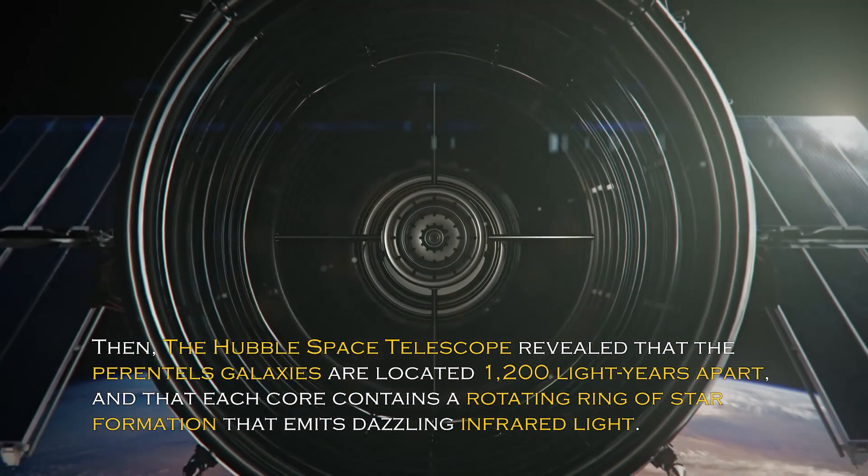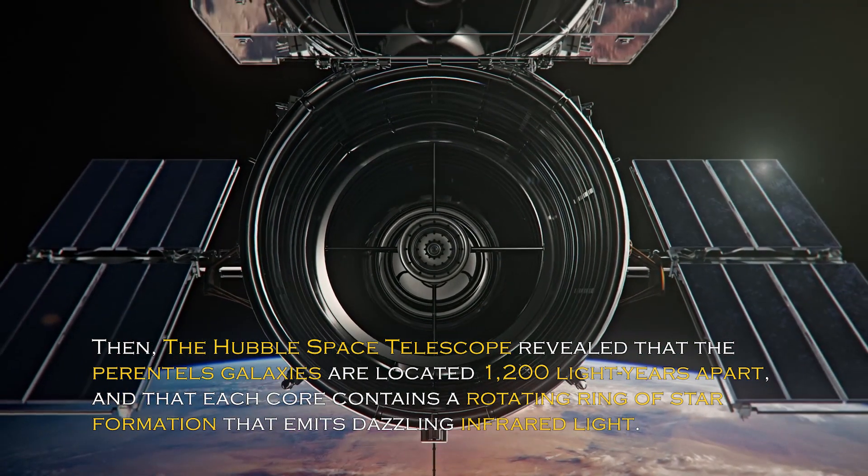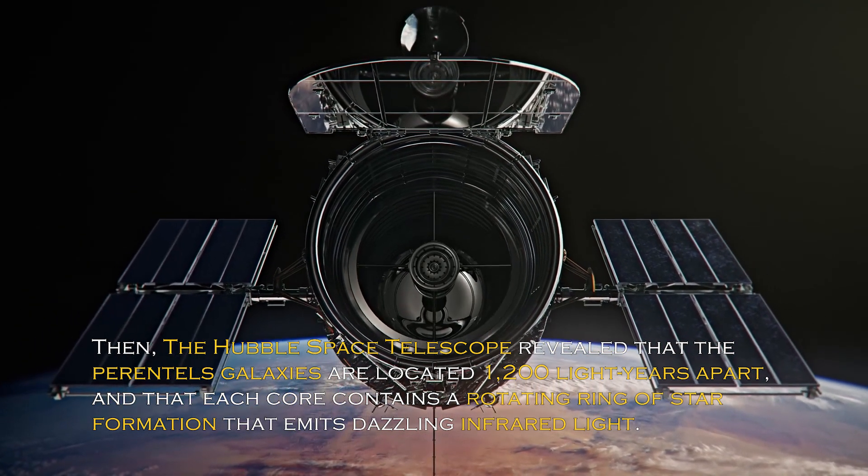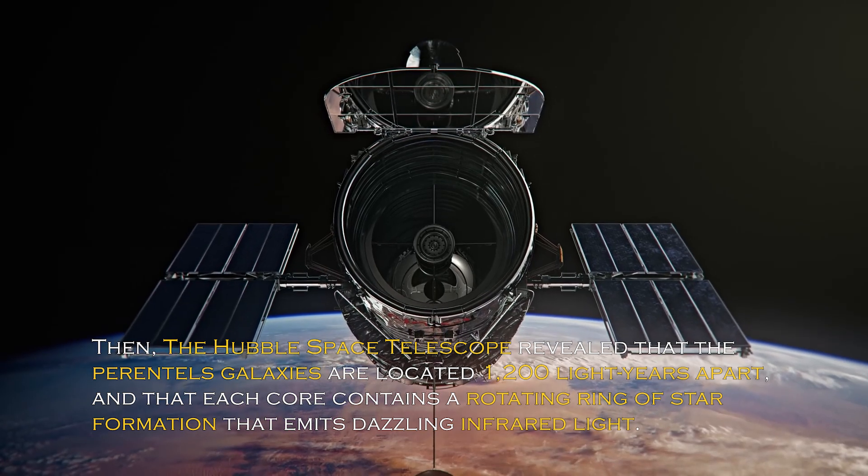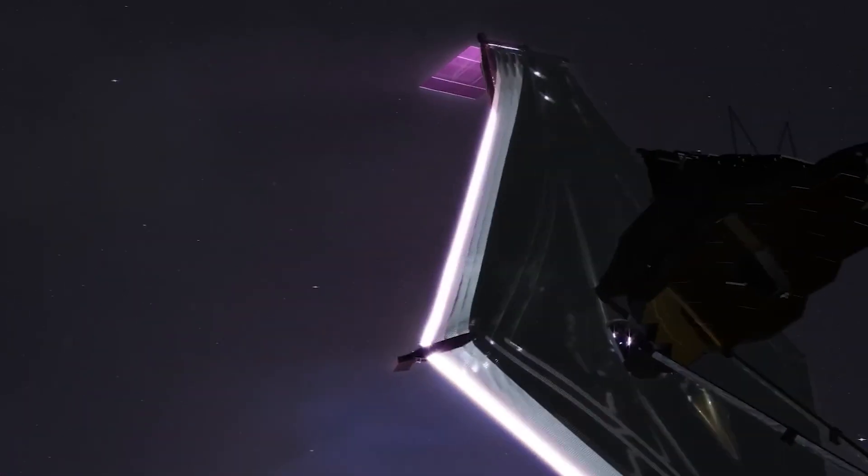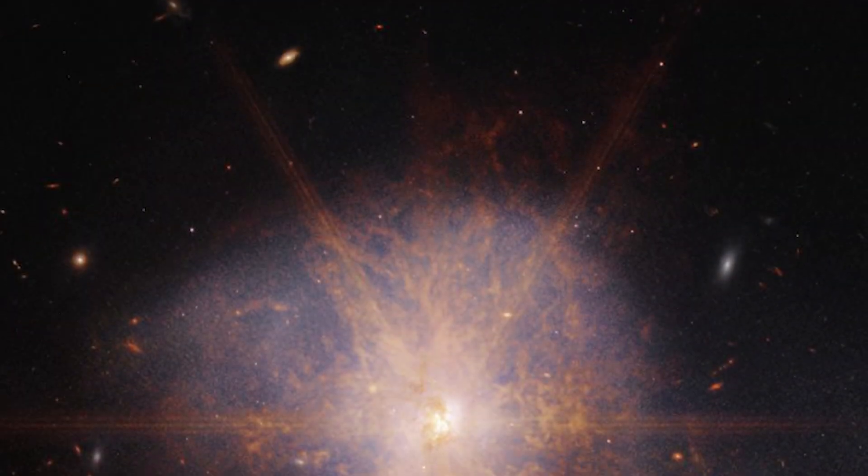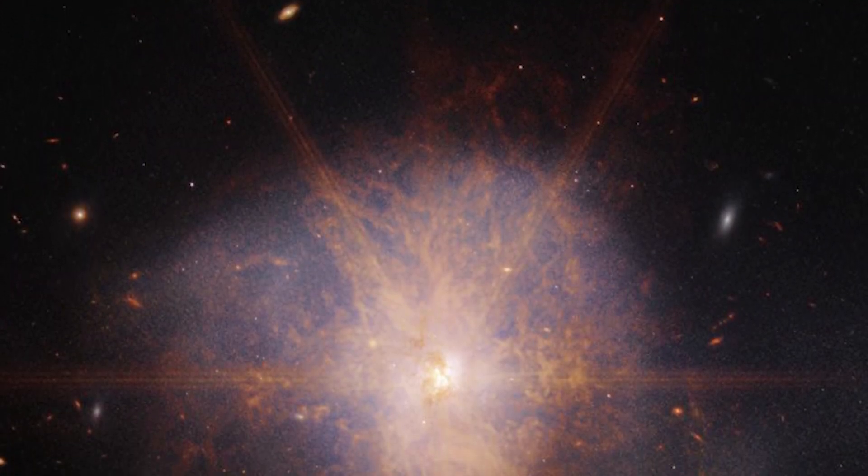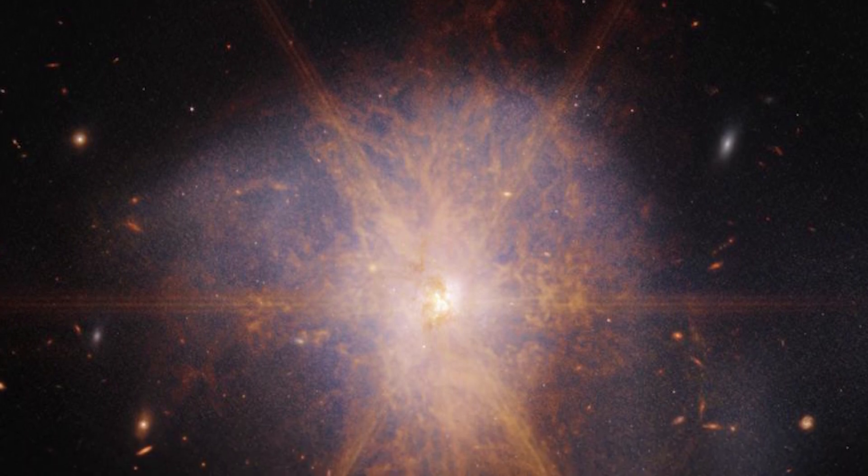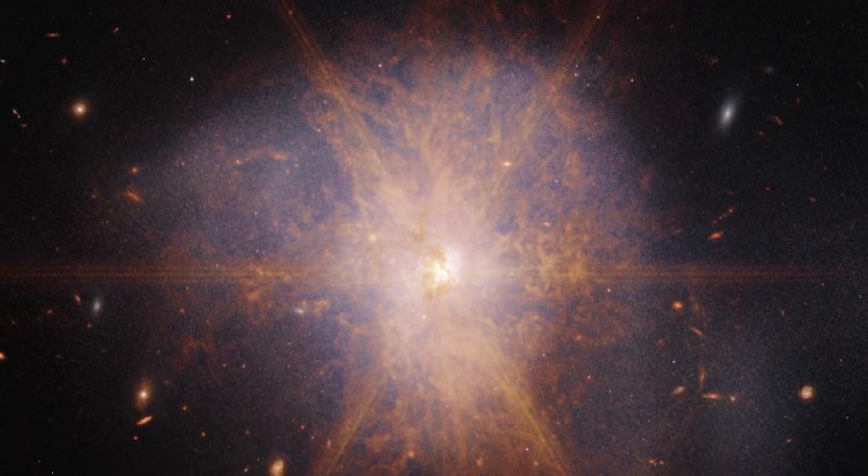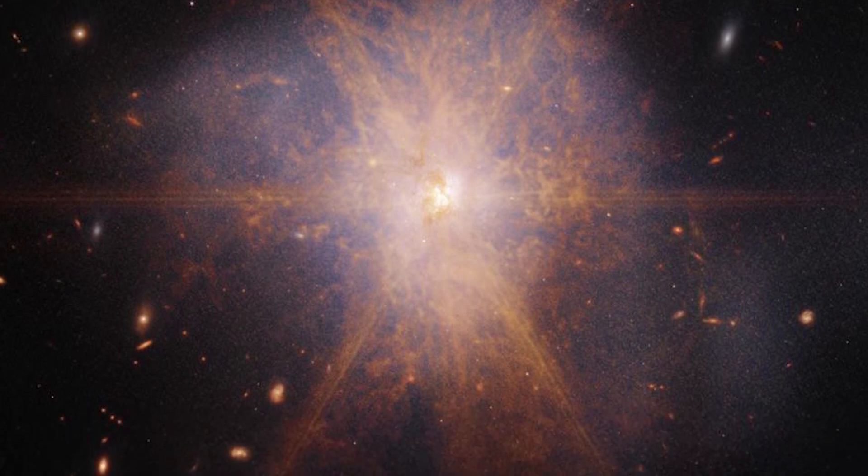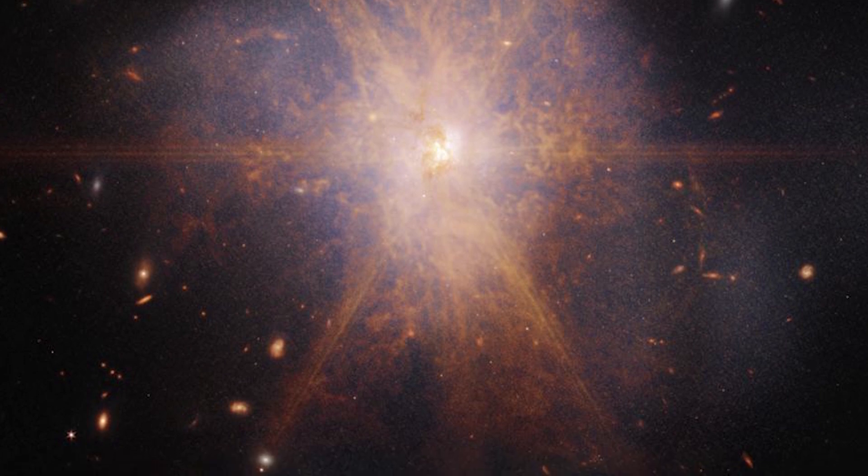Previous observations with radio telescopes discovered about 100 supernova remnants in less than 500 light-years across. Then the Hubble Space Telescope revealed that the parent galaxies are located 1,200 light-years apart, and that each core contains a rotating ring of star formation that emits dazzling infrared light. The latest views from the James Webb Space Telescope show an impressive galactic merger of the two galaxies. This image also shows faint tidal tails extending from the outskirts of the merger, indicating the gravitational pull between the two galaxies. Finally, the reddish and orange streams and filaments represent scattered organic materials in ARP 220.